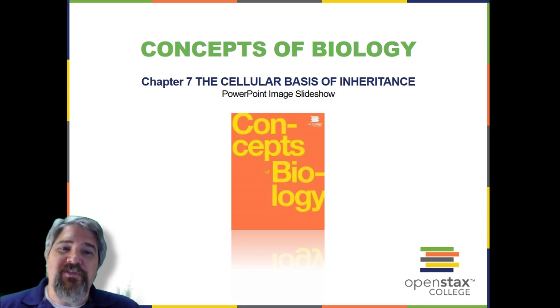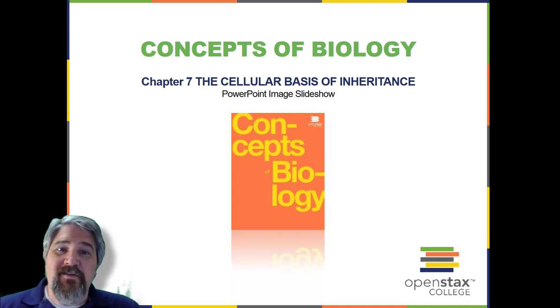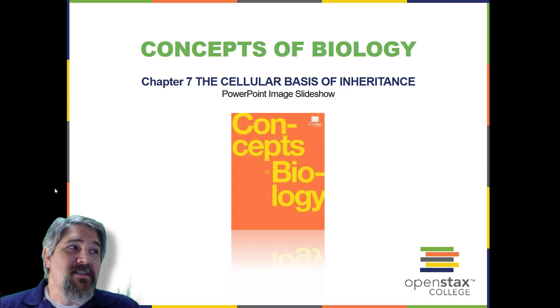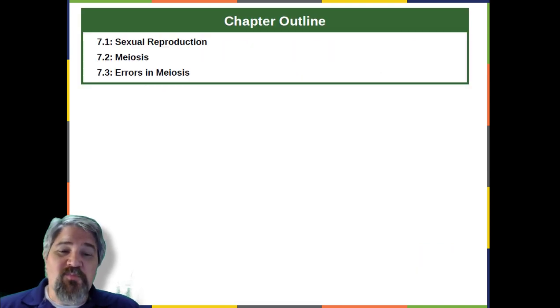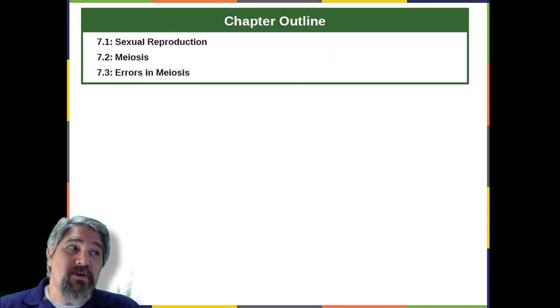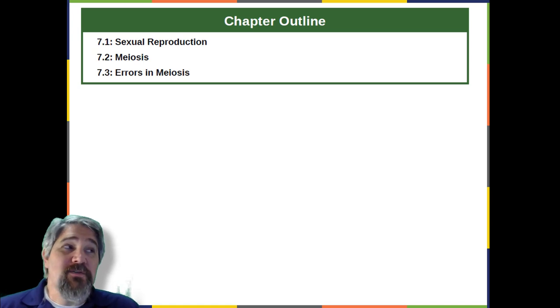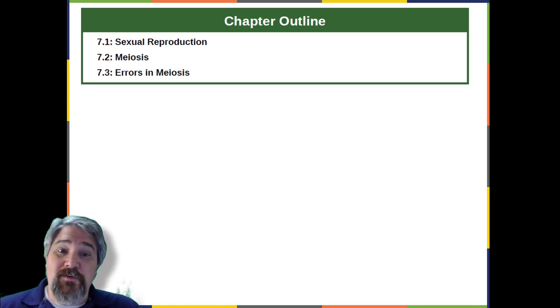Welcome to Chapter 7, The Cellular Basis of Inheritance. In this chapter, we will cover a brief overview of sexual reproduction, meiosis, and errors in meiosis.